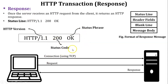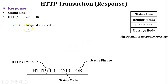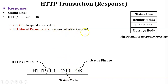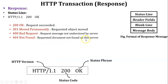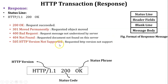Let us see the different status codes and status phrases. 200 OK means the request is succeeded. 301 means the requested object has moved. 400 means a bad request — the request message was not understood by the server. 404 Not Found means the requested documents are not found on this server. 505 means the HTTP version is not supported by the server. So these are a few examples of status codes and status phrases that we often encounter on the internet.